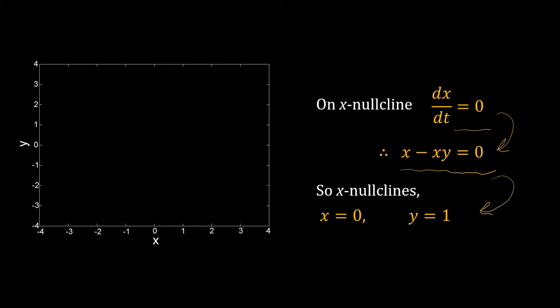Solving this equation, we get x = 0 or y = 1. So, we have two nullclines. One is x = 0 and the other one is y = 1. Draw the x nullclines.